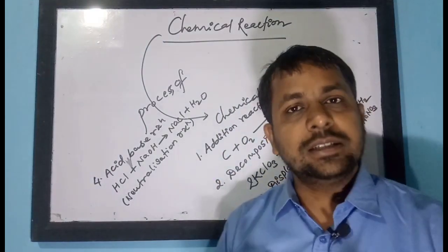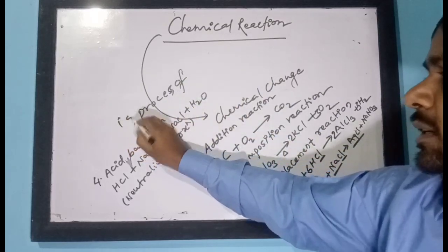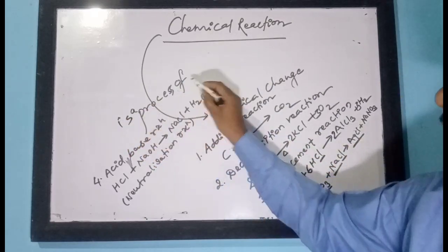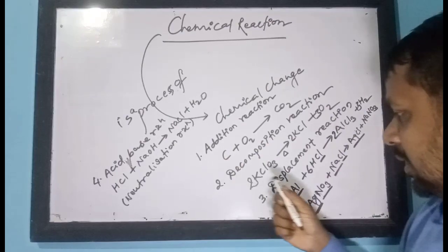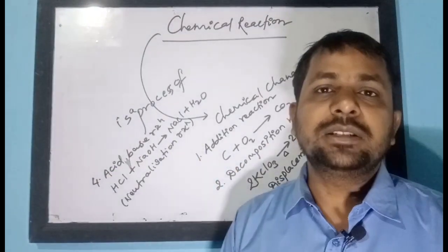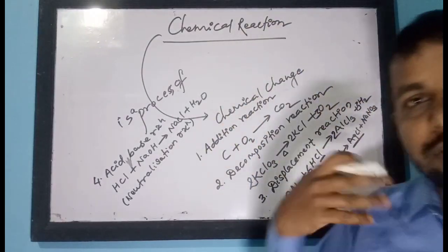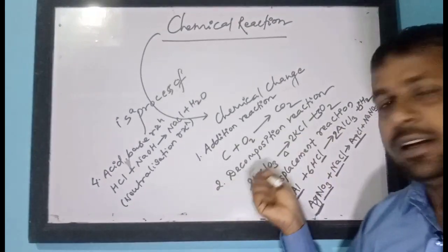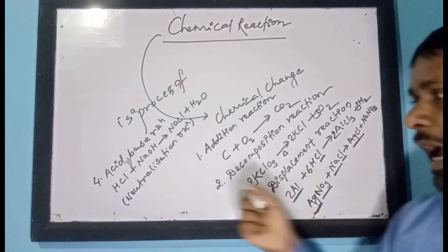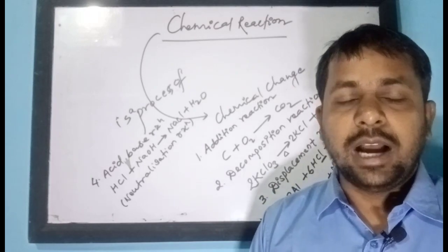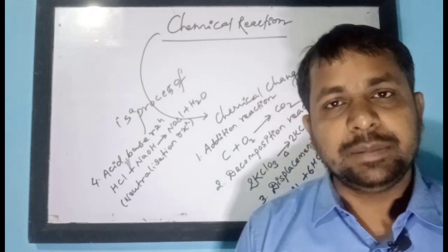Now we can define the chemical reaction completely. A chemical reaction is a process of chemical change that takes place by addition, by decomposition, by displacement, or by acid-base combination. Chemical reactions are of four types: addition reaction, decomposition reaction, displacement reaction (which includes single and double displacement), and acid-base reaction. I hope you understood what is a chemical reaction and the types of chemical reactions.